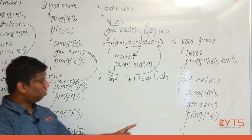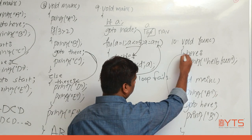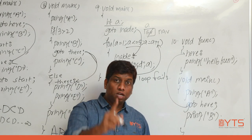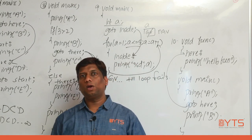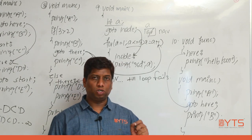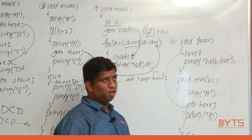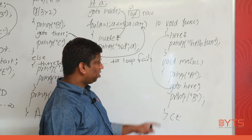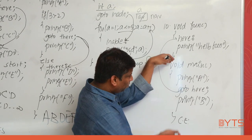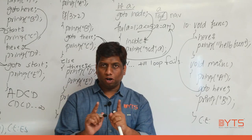Another important point from the tenth example: goto takes control from one place to another place within the same function. Goto cannot take control from one function to another function. That is why if you write a goto in main that references a label in another function, you get a compilation error: undefined label.